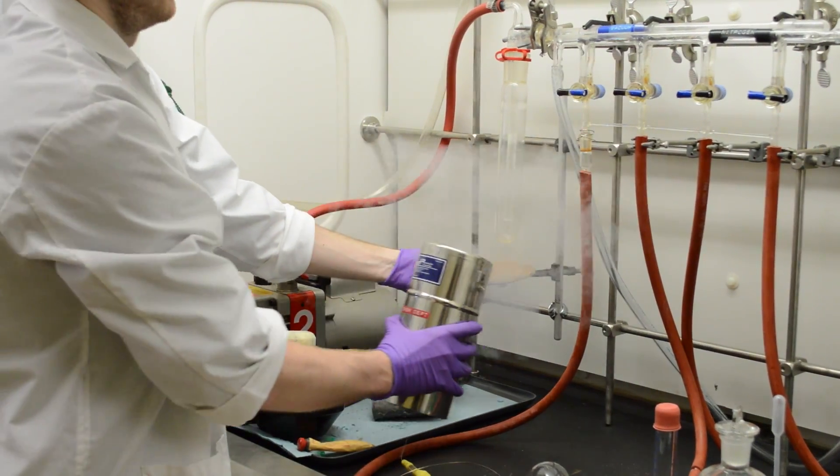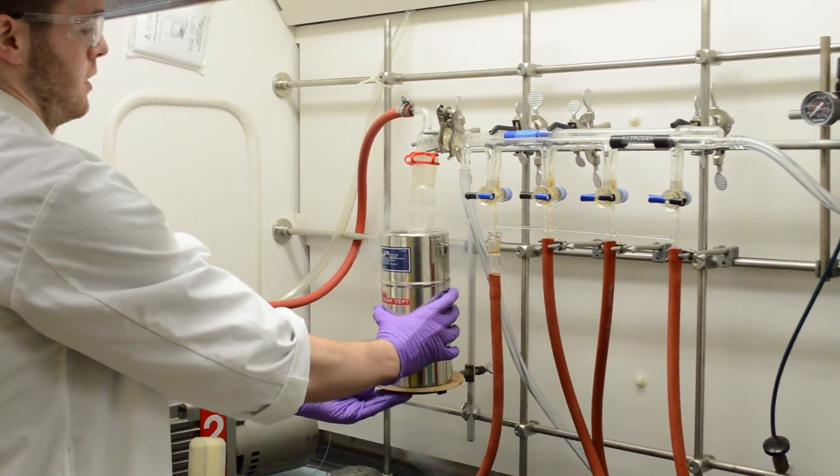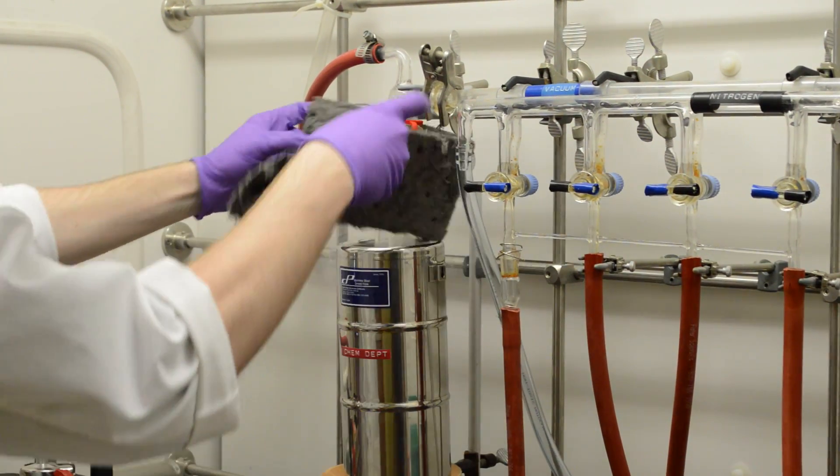Okay, so we use liquid nitrogen on the trap here to collect any solvents that will run through the system when it's under vacuum. So it will all collect in this vessel here.